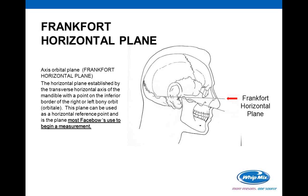We also use the Frankfurt Horizontal Plane, established by the transverse horizontal axis of the mandible with a point on the inferior border of the right or left orbit, or what is called the orbitale. The orbit is that piece at the bottom of the eye, and it runs through the central part of your ear. This is the plane that most face bows use as a beginning point of measurement.